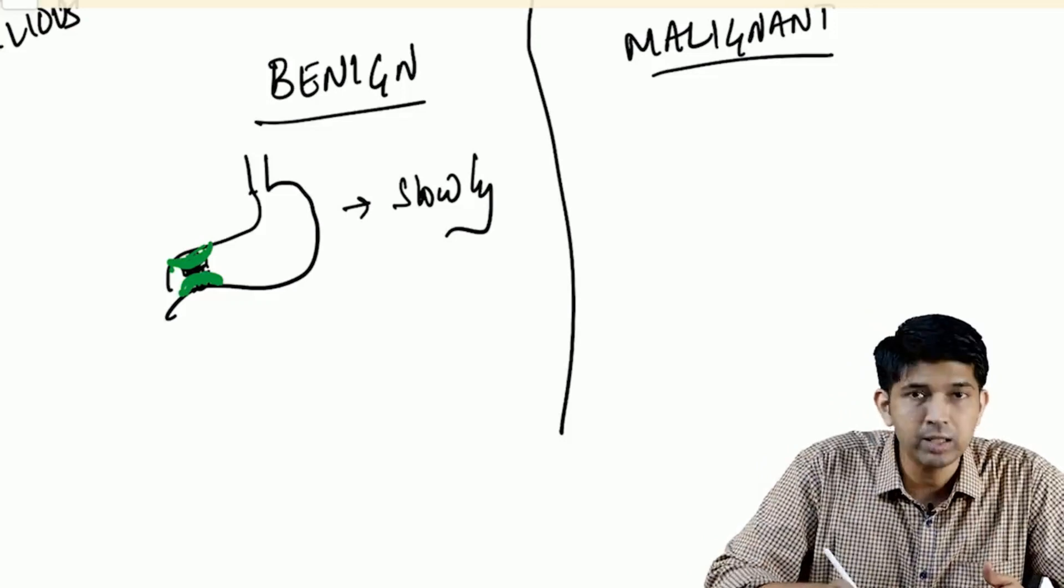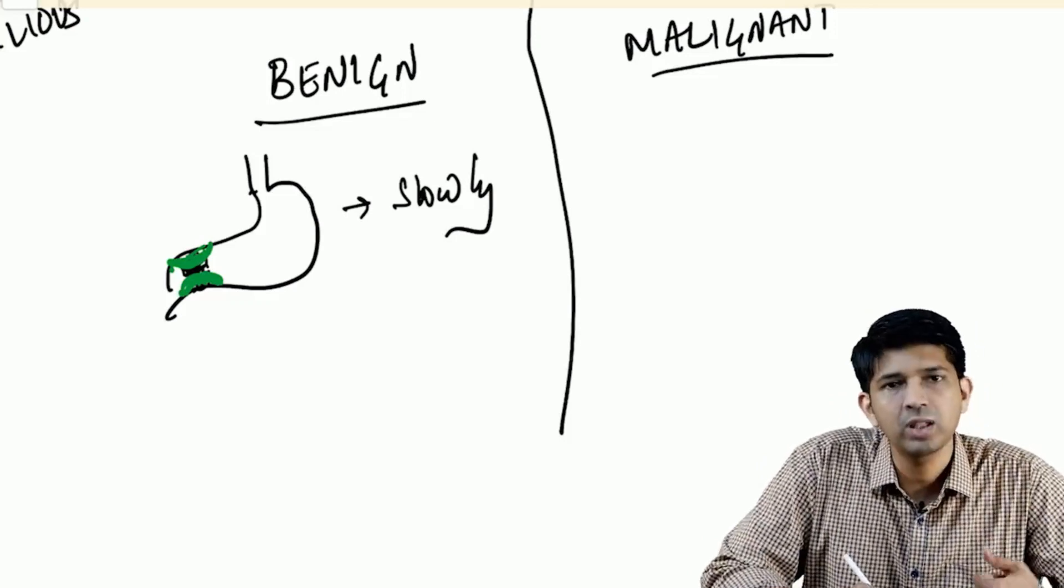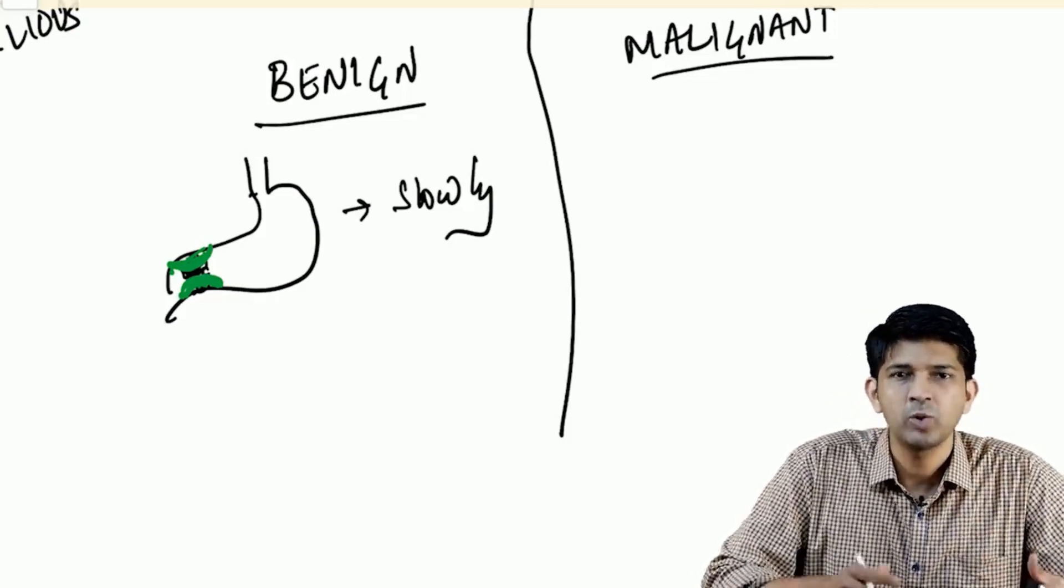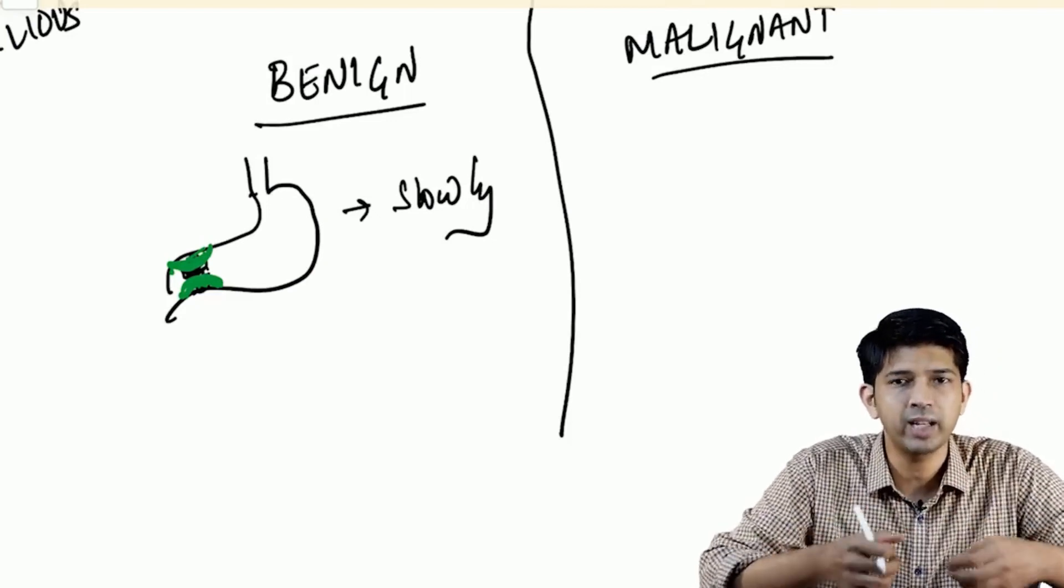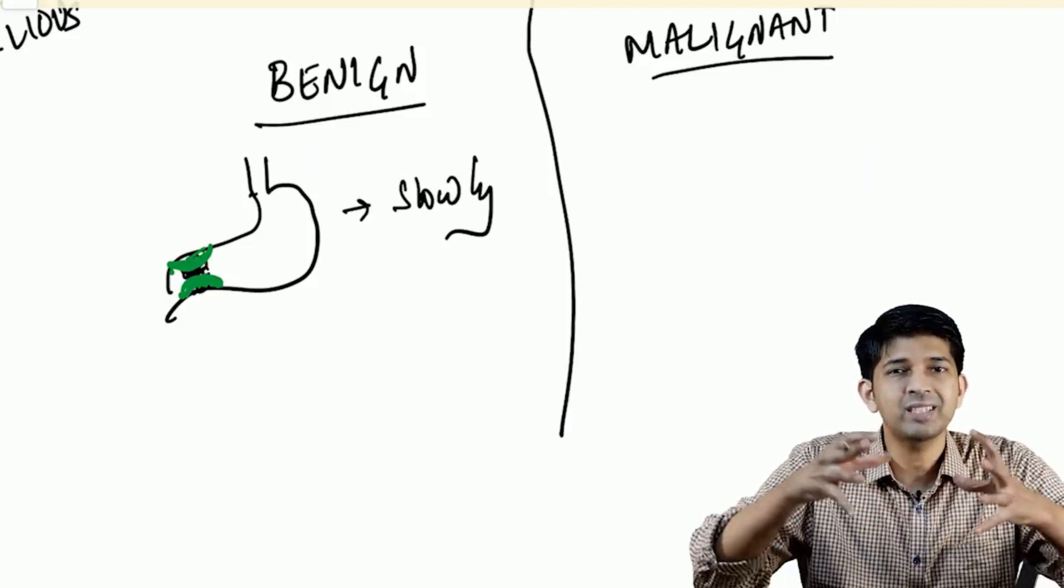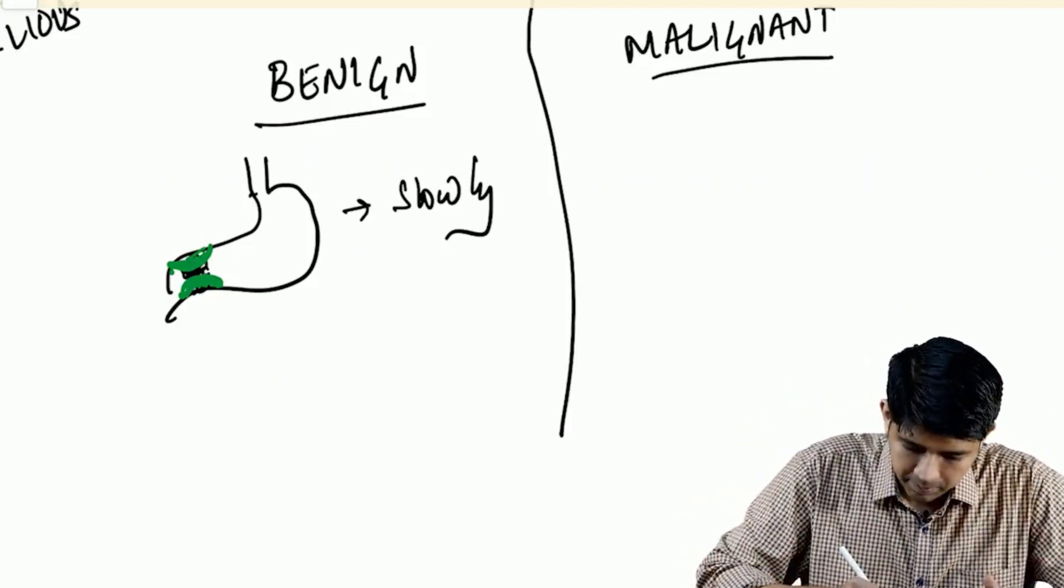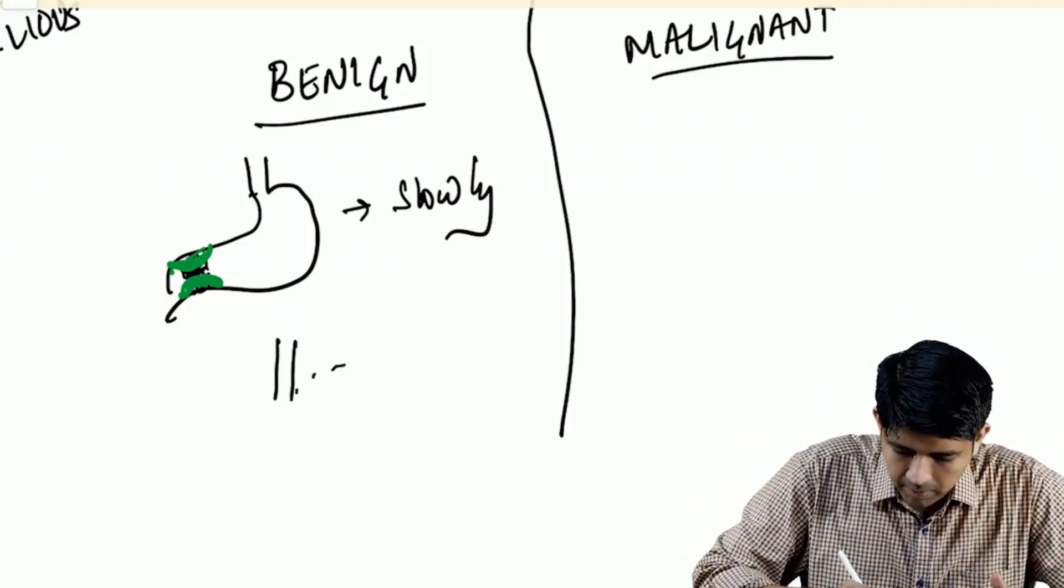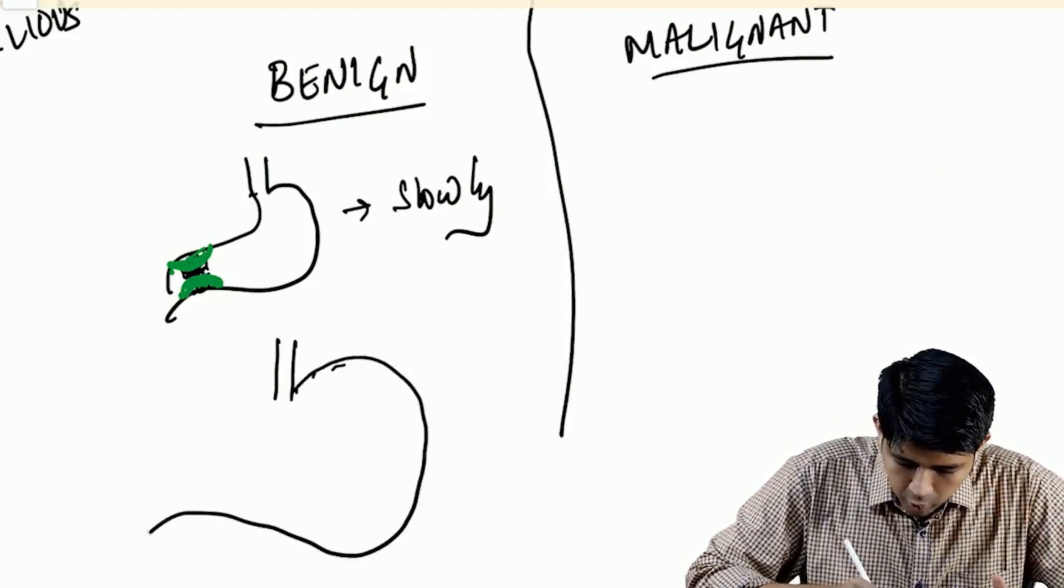What happens? We know that the stomach is made up of muscles. These muscles will continue to push against resistance. When they push, there will be hypertrophy of the muscles - that is one thing. Second, the stomach will go on distending because it's a slow process, so the stomach will become huge like this.